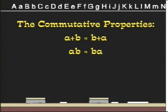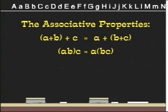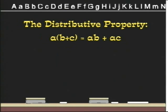The associative properties: A plus B plus C equals A plus B plus C, and AB times C equals A times BC. The distributive property: A times B plus B plus C equals AB plus AC.